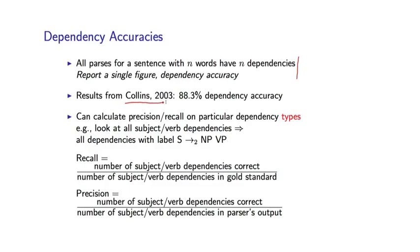If we look back at the results from my PhD thesis parser, again, around 88% dependency accuracy. Now one very nice property of these dependencies is that we can delve a little deeper here by looking at the accuracy, or more specifically the precision and recall, in recovering different dependency types.